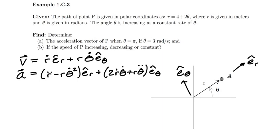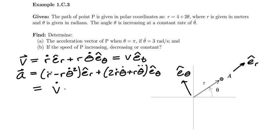In this problem we're asked not only for the acceleration vector, but we're also asked to determine if the speed is increasing, decreasing, or constant — that is, to find the sign of the rate of change of speed. To do that, we're going to have to also express the velocity and acceleration in terms of path coordinates. The velocity can be expressed as speed v in the e_t direction, and the acceleration as v_dot in e_t plus v squared over rho in e_n.